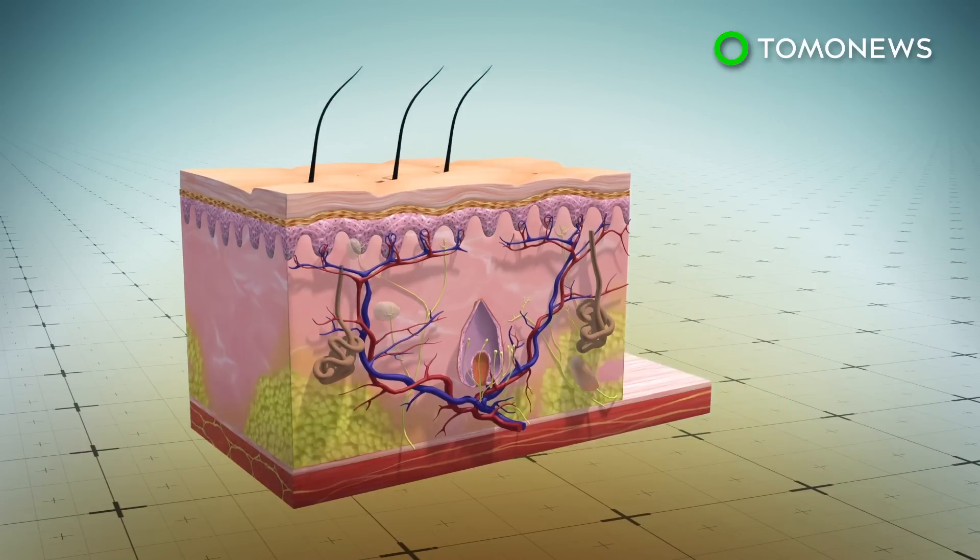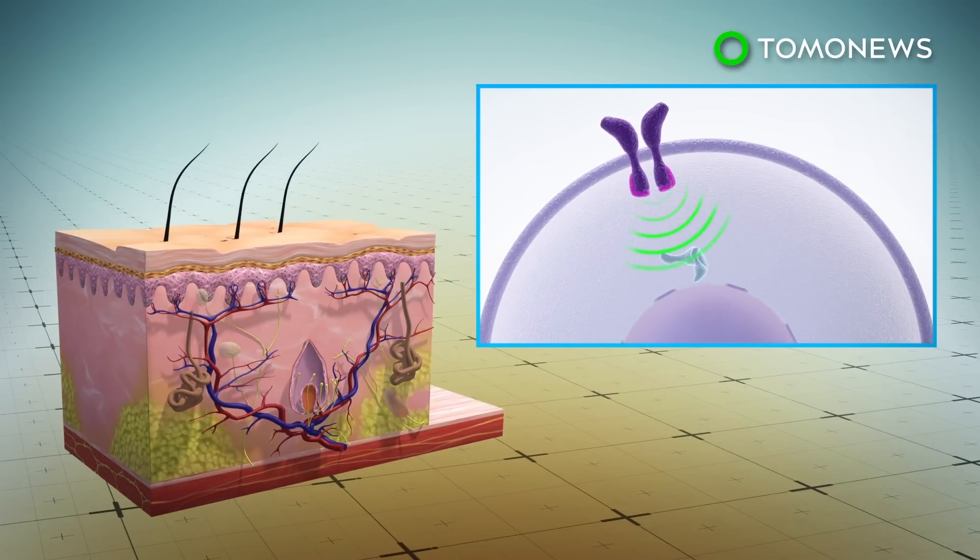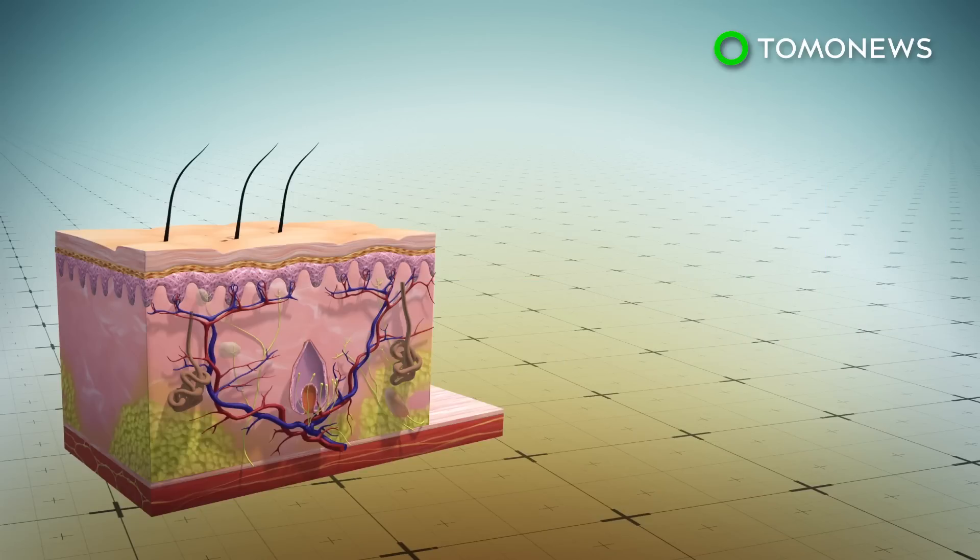Researchers had previously discovered a pathway called JAK-STAT in the stem cells of resting hair follicles that keeps them in a dormant state. By controlling pathway activity, JAK inhibitors can trigger follicle growth.